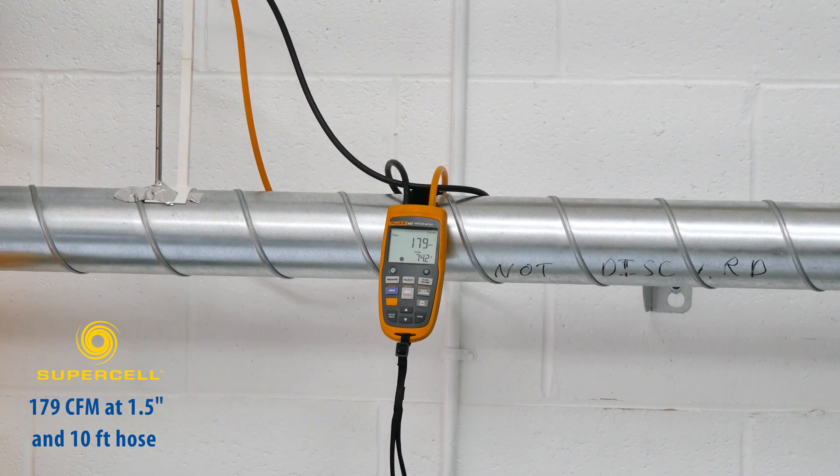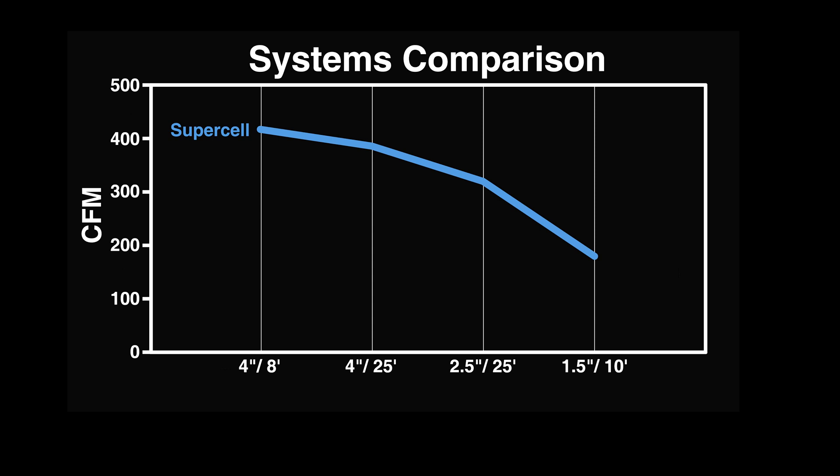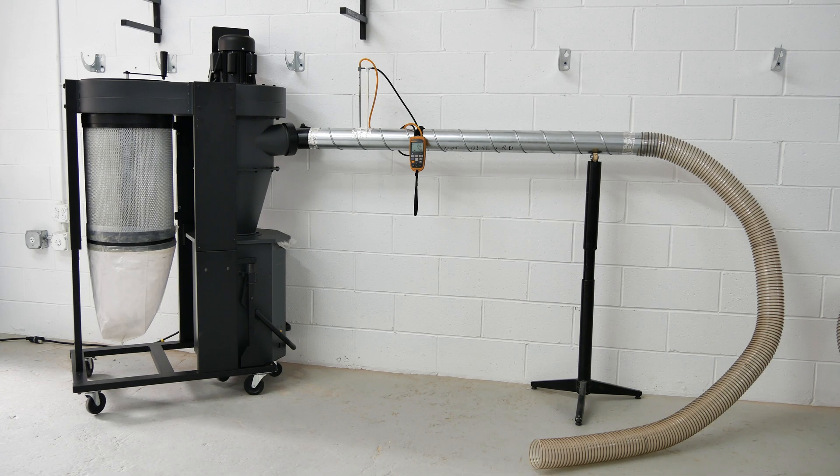Here are the Supercell results in graph form. Let's move on to trial two. We ran the same test on what we referred to as Dust Collector A, a traditional 1.5-horsepower two-stage dust collector.